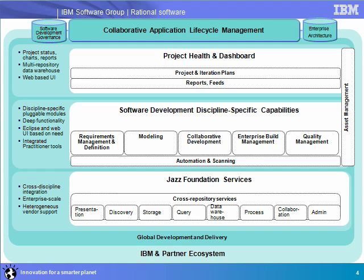And then there are the software development disciplines, with requirements definition and management, modeling, collaborative development, build management, and quality management, with automation and scanning underpinning all of them. You need the ability to do deep dives on any one of them. And really, the project health and dashboard is reporting on the activities across all of those disciplines.